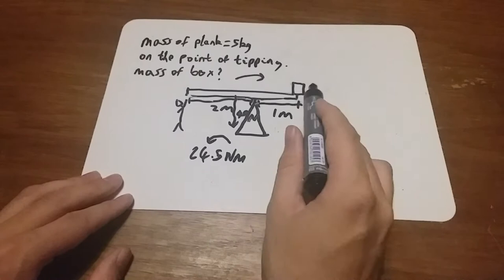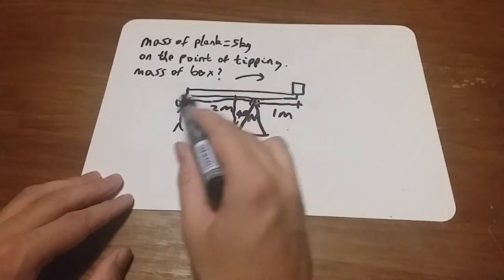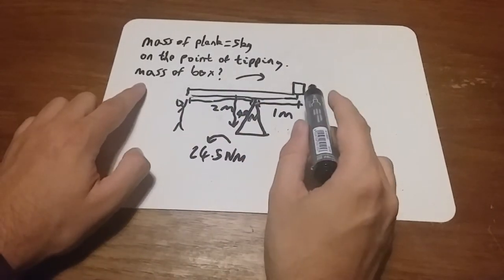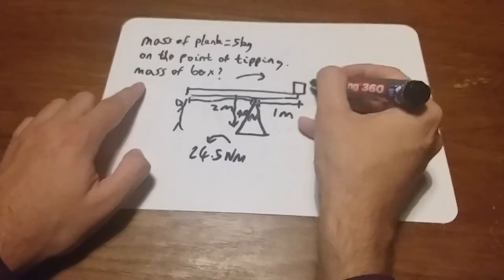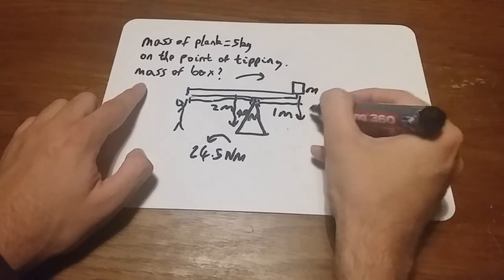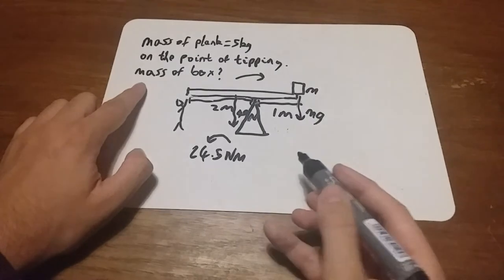Going around this way would be 1 meter times the weight of this box. Let's call it mass m. The weight here would be mg, so m times 9.8.